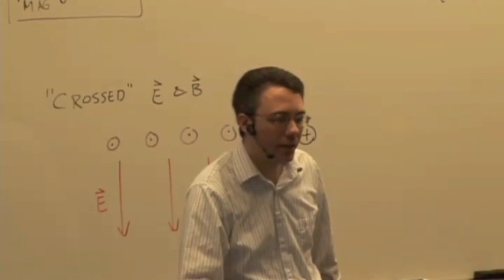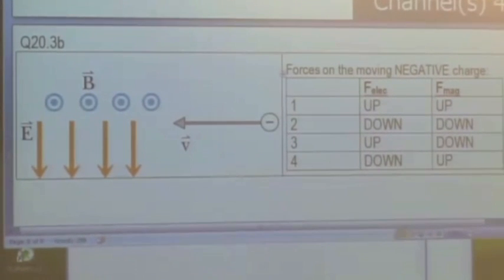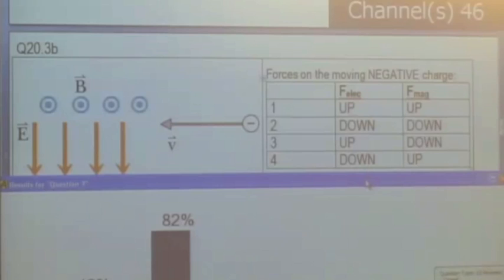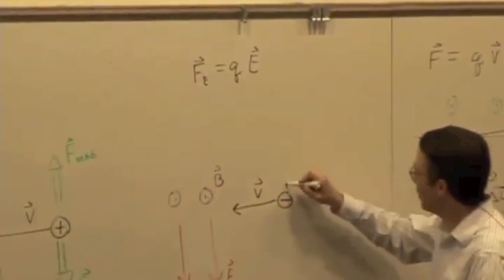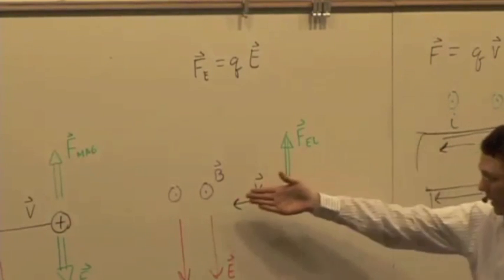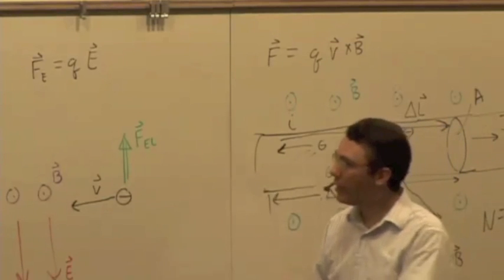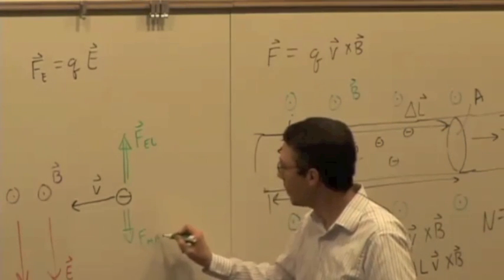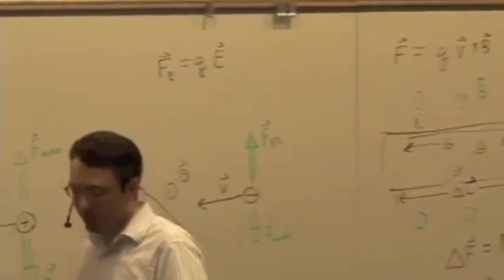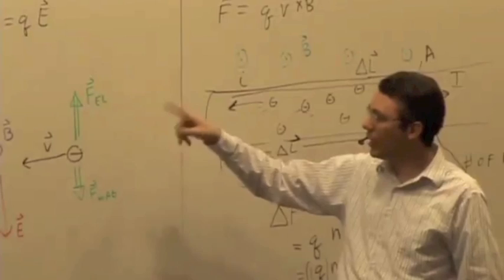Let's change the sign — same situation, only now it's a negative charge. The electric force is now pointing up, because if you multiply the field by a negative number you get a force in the opposite direction, so we've just flipped the direction of both forces. The magnetic force points downward: Q times V cross B is still up, but when you multiply by a negative charge you flip the direction. So no matter what sign of charge we pick, we get the two forces in opposite directions.